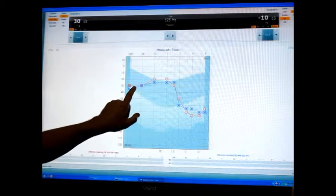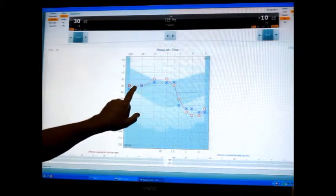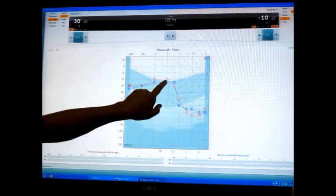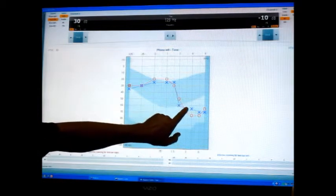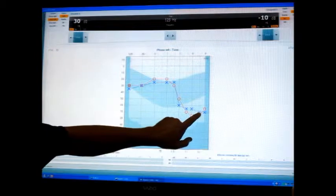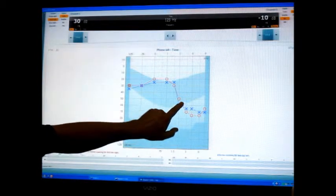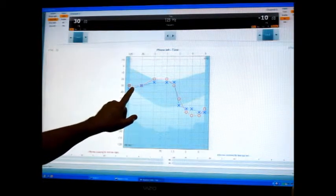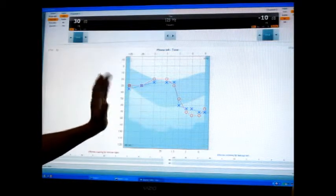The first thing that we notice right off the bat is how similar both ears are in terms of how well they're hearing. They're not exactly the same, but the degree of symmetry is what we want to see for both ears to have a similar level of hearing.